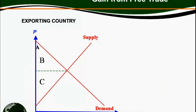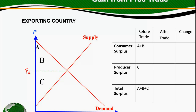What about the exporting country? Before it opens up to trade, again the demand and the supply function at home would determine what the equilibrium price is. The consumer surplus before it opens up to trade is given by the area below the demand function above the equilibrium price, which is A plus B. The producer surplus is the area above the supply function and below the equilibrium price, which is C. So the total surplus is A plus B plus C.